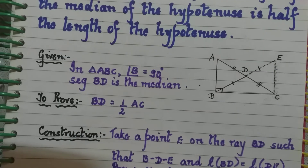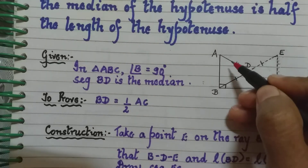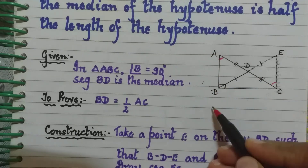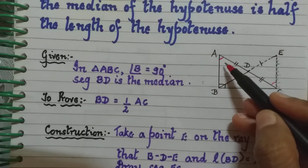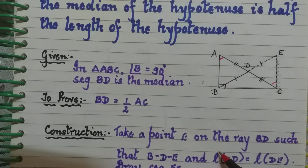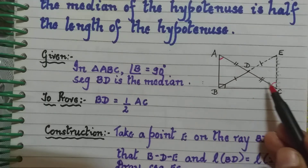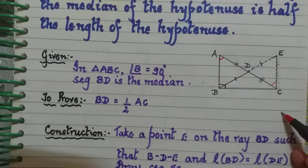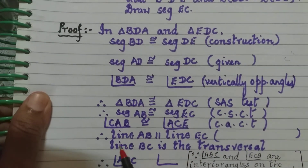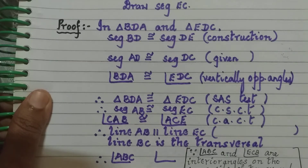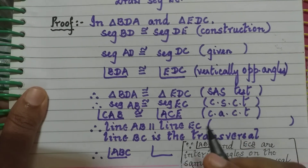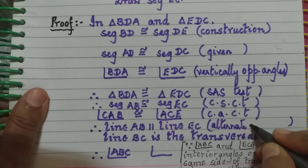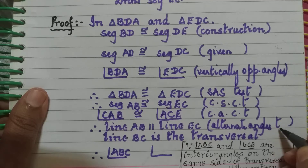If angle CAB is congruent to angle ACE, these are alternate angles on either side of the transversal, and alternate angles being equal means line AB is parallel to line EC by the alternate angles test.